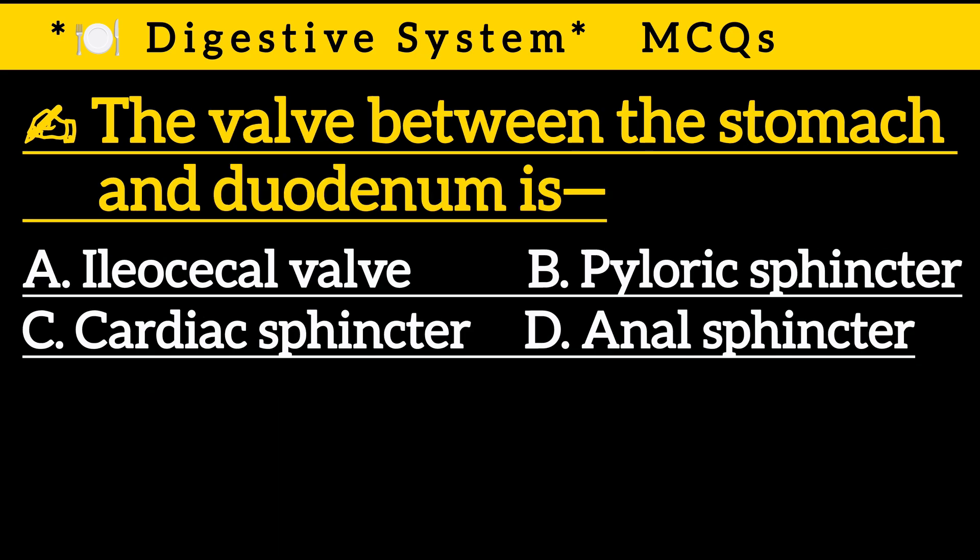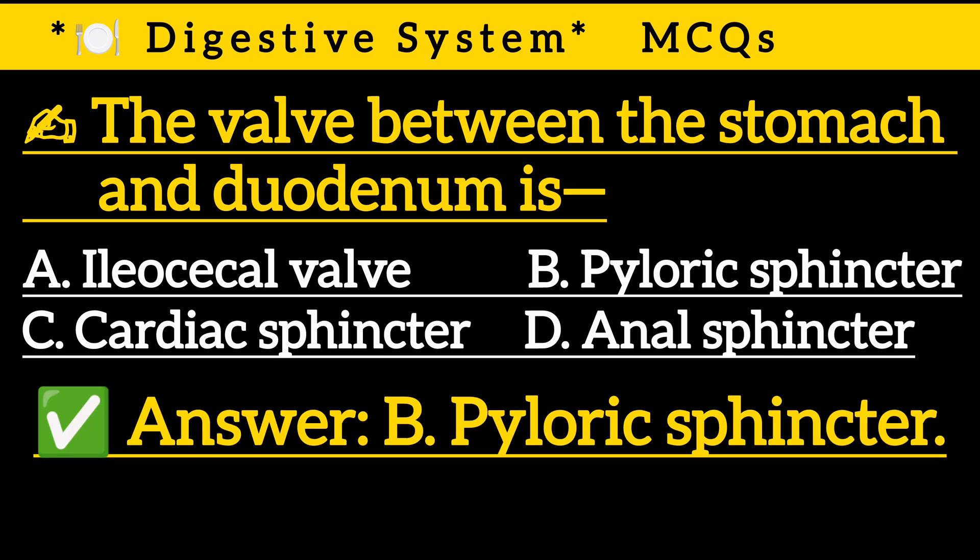Question 22: The valve between the stomach and duodenum is — Option A: Ileocecal valve, Option B: Pyloric sphincter, Option C: Cardiac sphincter, Option D: NL sphincter. Correct answer is Option B: Pyloric sphincter.